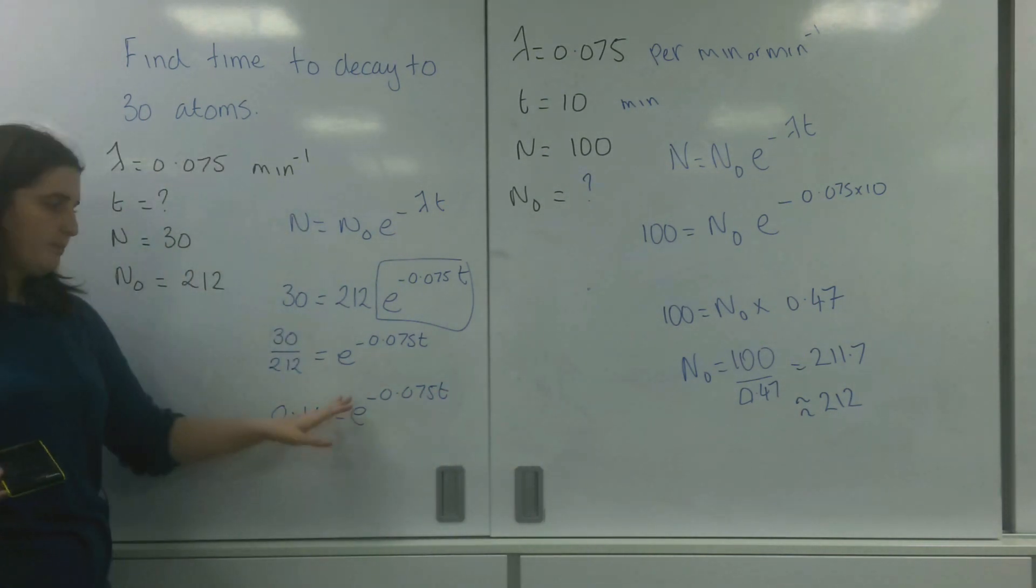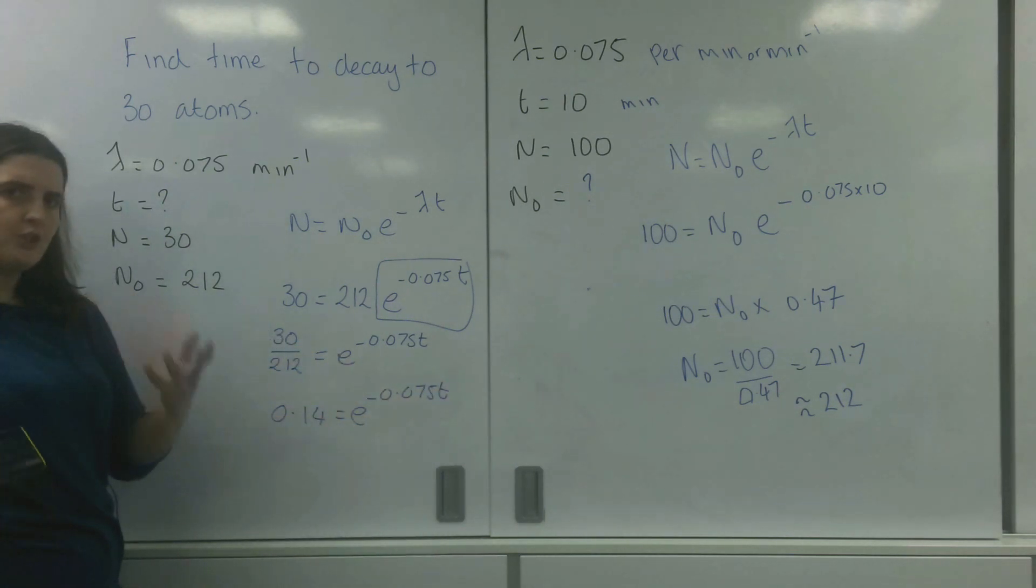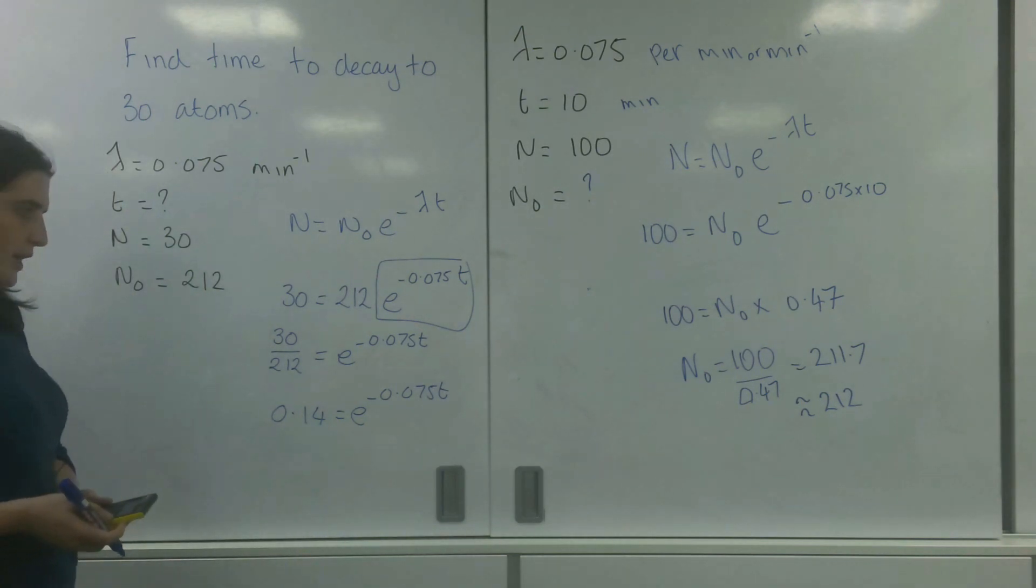Now how you undo this power is you are trying to find this power. And what you have to do is use logarithms. And because you're using E, you can use a logarithm called a natural logarithm. So if I ln this side,